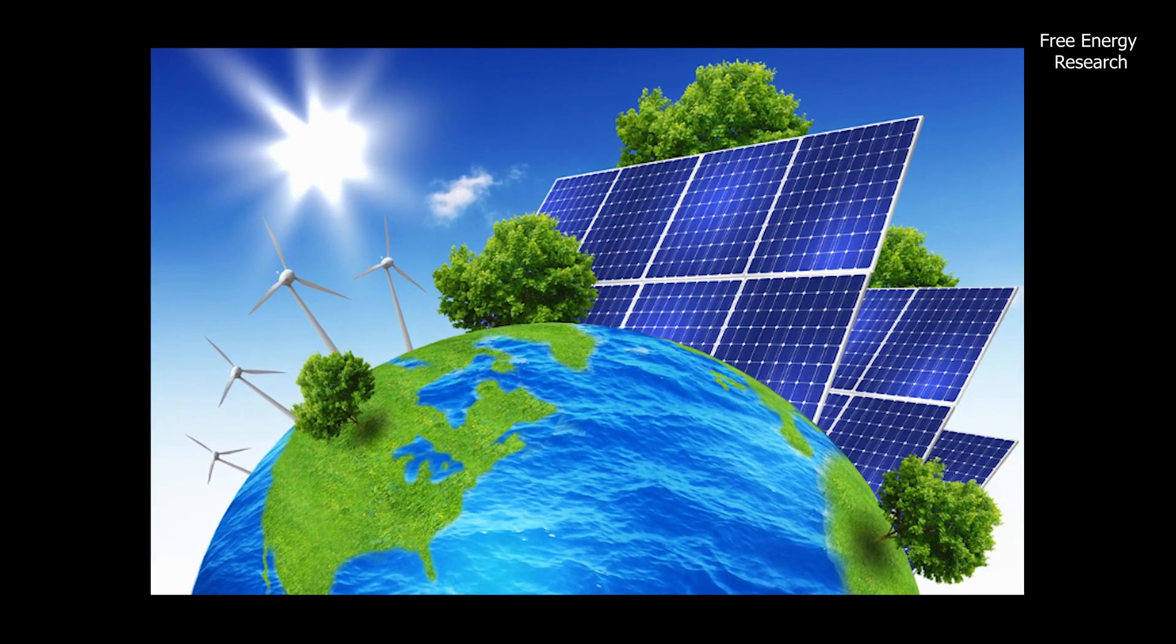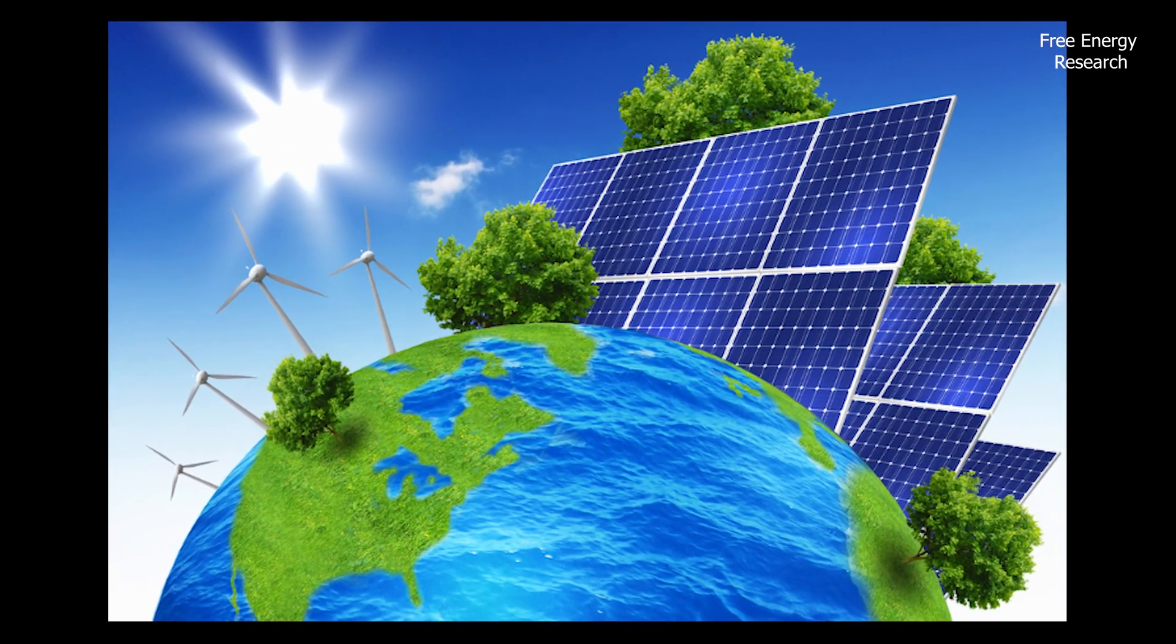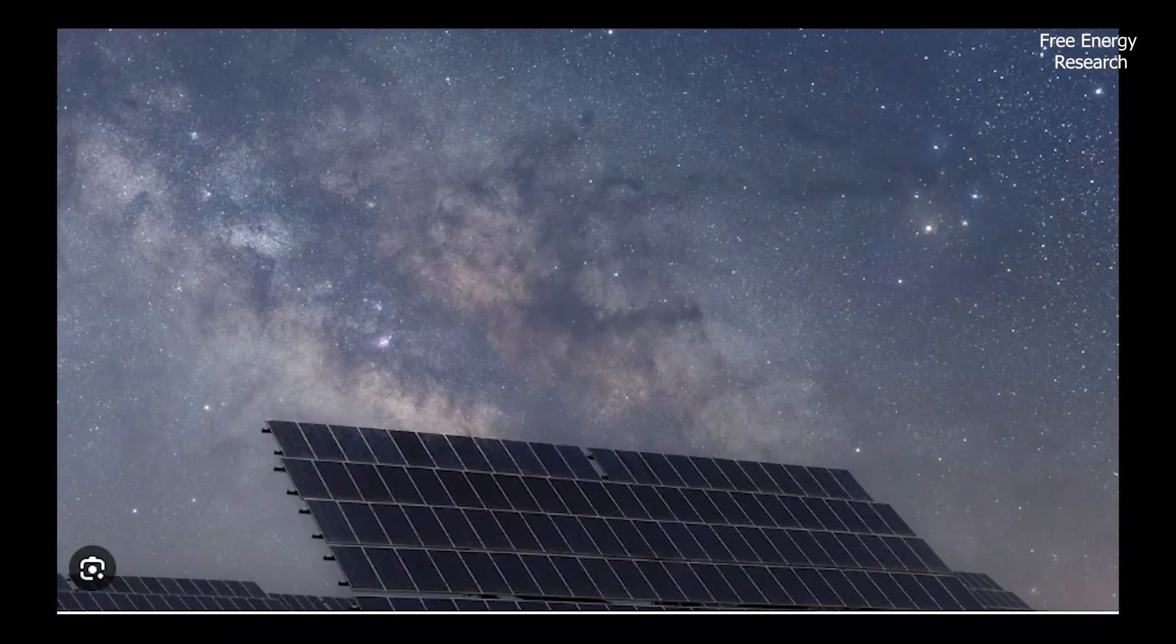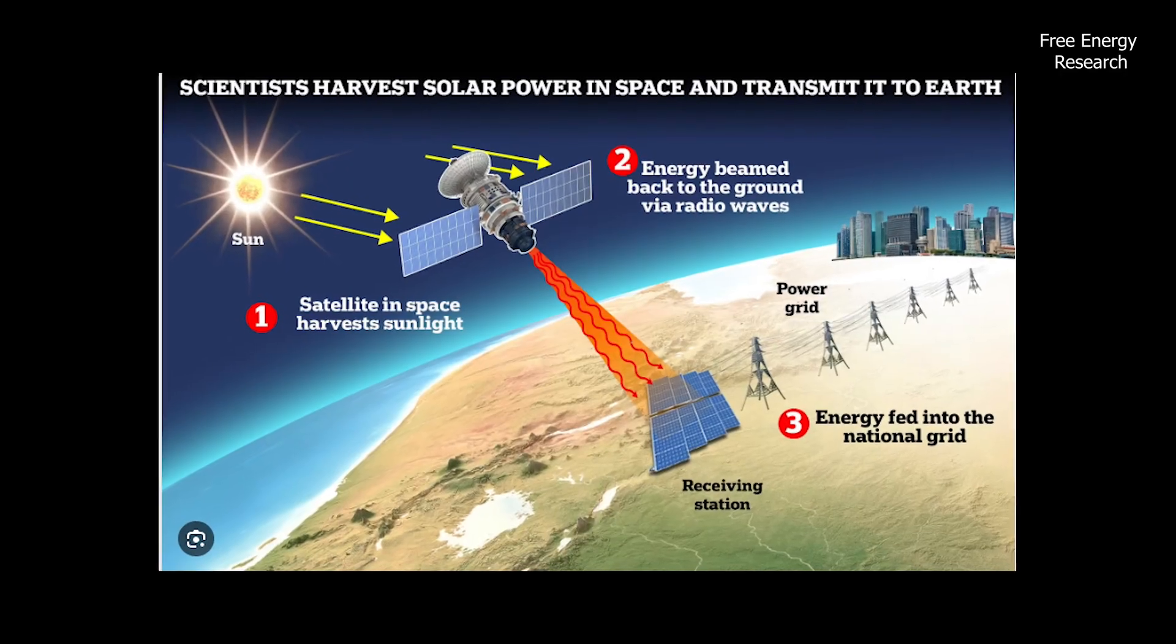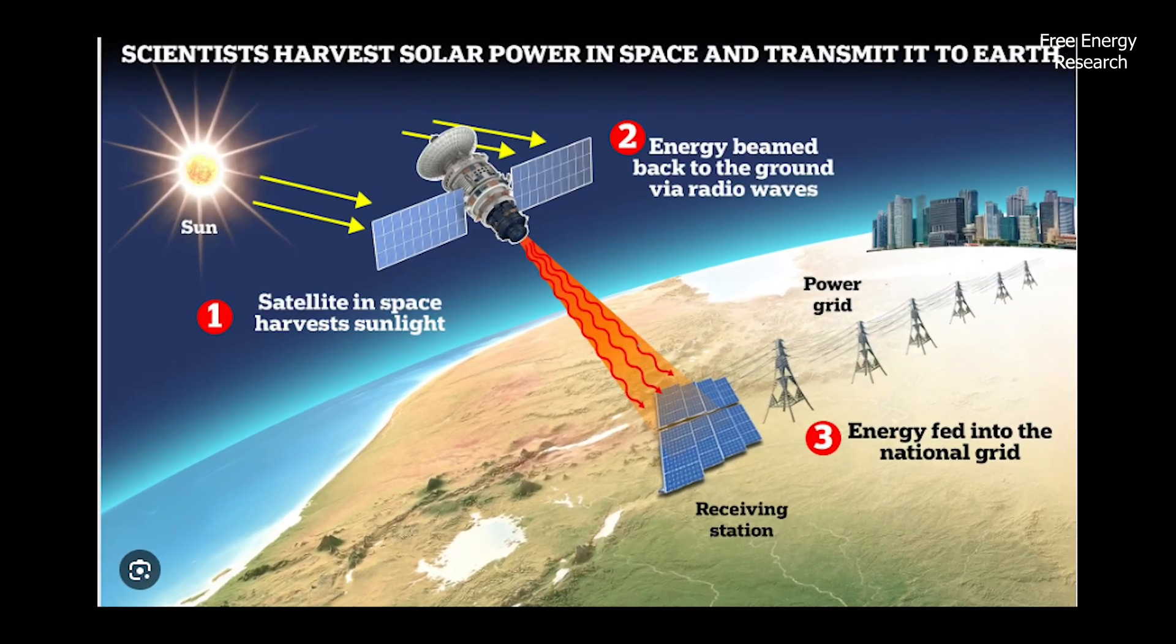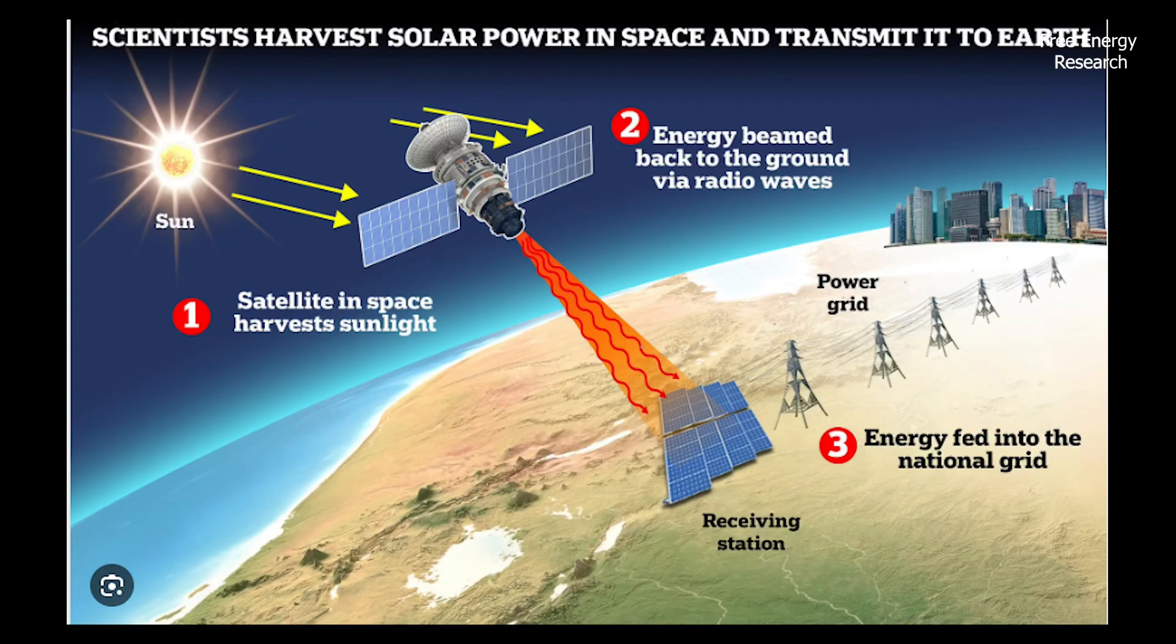Solar panels on earth already provide us with a clean source of power, but they can be a blot on the landscape and are practically useless when it's dark. Now scientists in California have provided a solution: sending solar panels to space so they can harness the sun's power 24/7.